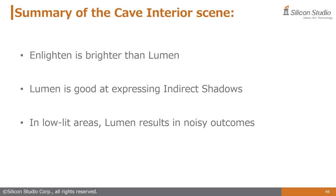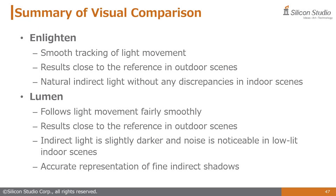In summary for the cave interior: Enlighten tends to be brighter overall, Lumen expresses good indirect shadows, and in low-lit areas Lumen produces some noise. Overall, Enlighten smoothly follows light movement and provides good response, consistently generating results close to the reference in outdoor scenes and maintaining natural indirect lighting in indoor scenes. Lumen also achieves results close to the reference outdoors but exhibits slight darkness and noticeable noise in low-lit areas, while accurately representing fine indirect shadows.